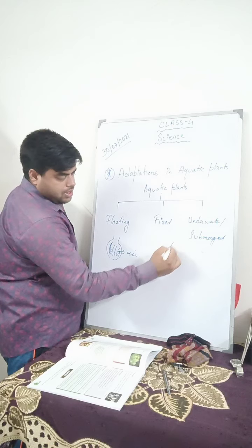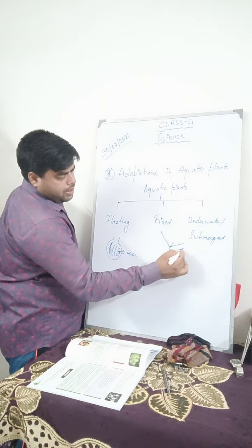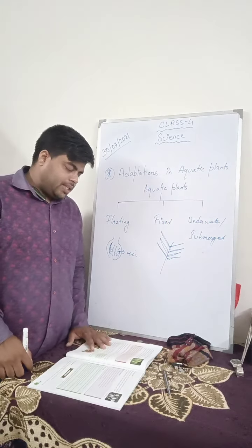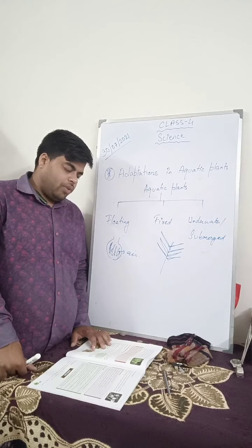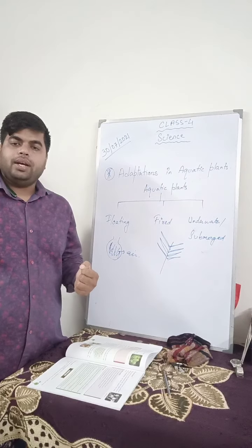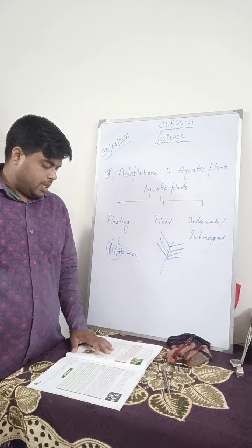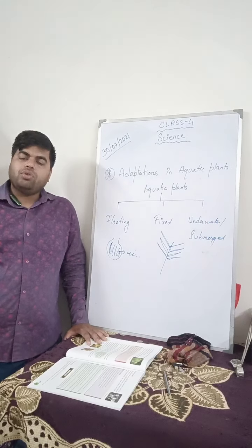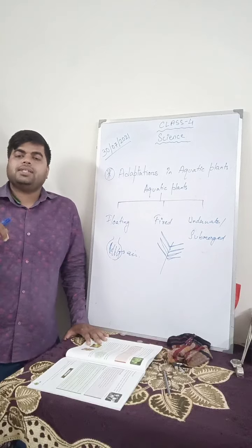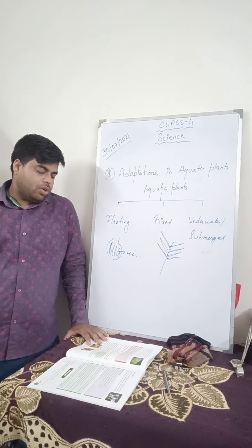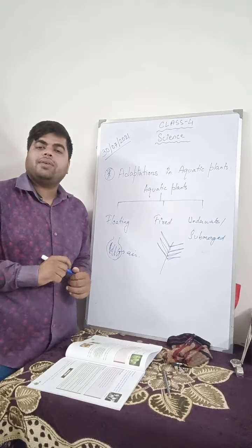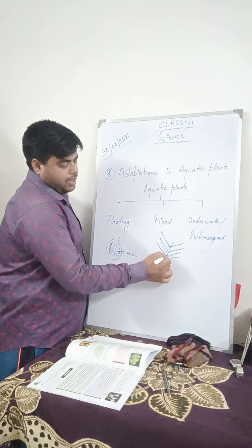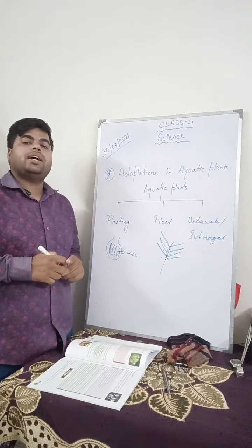These plants have thin, ribbon-like narrow leaves with no stomata. Their stems are flexible and filled with air, which helps them move along the flow of water. Roots fix these plants in the muddy soil inside the water. They breathe in and out directly through their body surface — since they do not have stomata, they breathe through pores on the surface of the body.